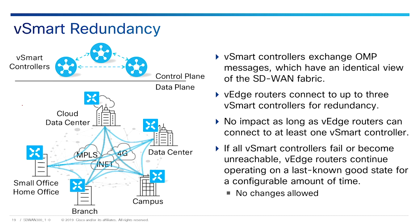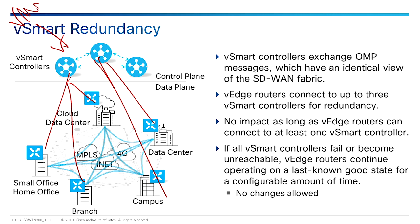vSmart redundancy doesn't require any particular configuration except affinity to regions if multiple regions are required. Each vSmart has the same view of the fabric and synchronization between them is automatic. A vEdge connects to a maximum of three vSmart controllers, and it's recommended that the vEdge connect to at least two. A single vSmart connection is sufficient for full configuration, but if no vSmart is available, the fabric keeps working in its current state with no impact on data plane traffic — however, no policy changes can be made, since all policy changes are routed through vSmart. We configure policy on vManage, it gets pushed to vSmart, and vSmart pushes it to each device.